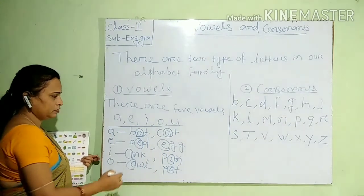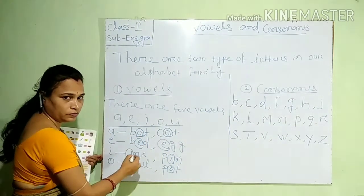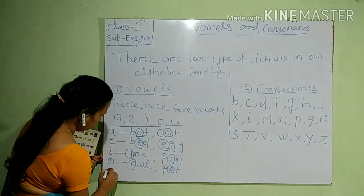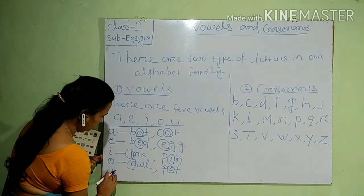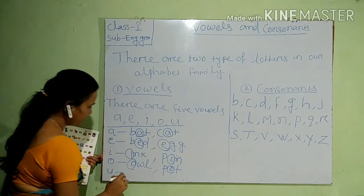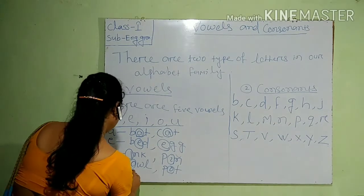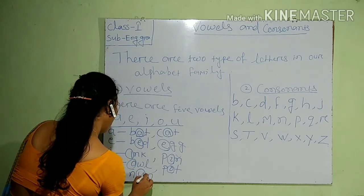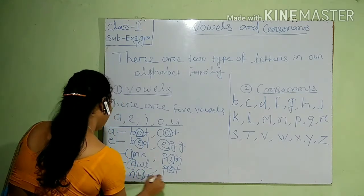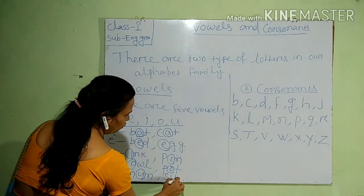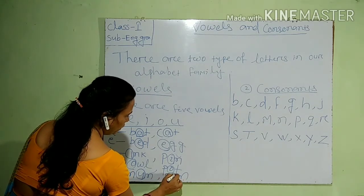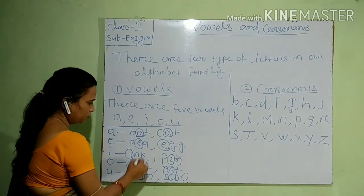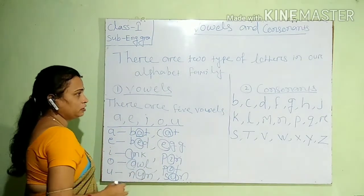These are our O vowel sound words. Then U vowel sound words: N, U, N — NUN. S, U, N — Sun. Here we used U, and these are all our vowel sound words.